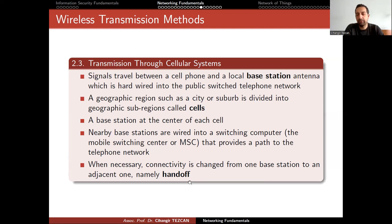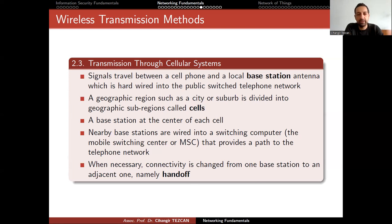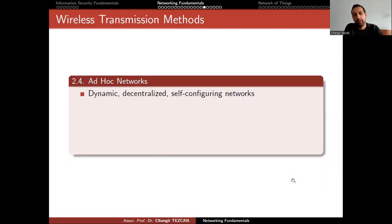Connectivity is changed from one base station to an adjacent one — this is called handoff. If you're traveling in a car, you will be changing base stations frequently, so handoff occurs many times.